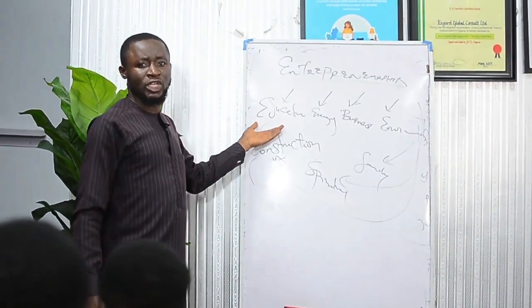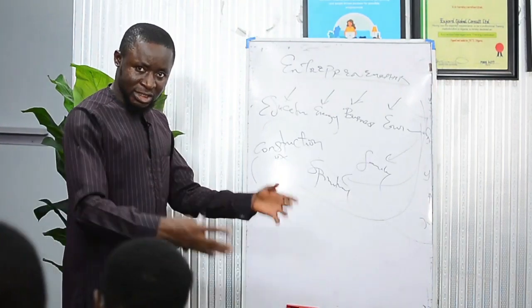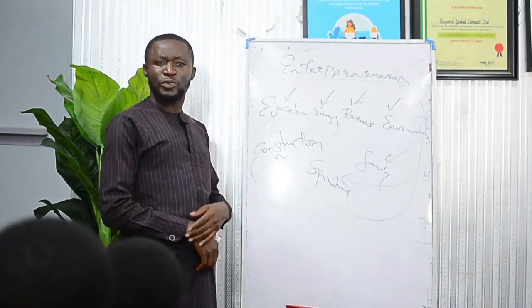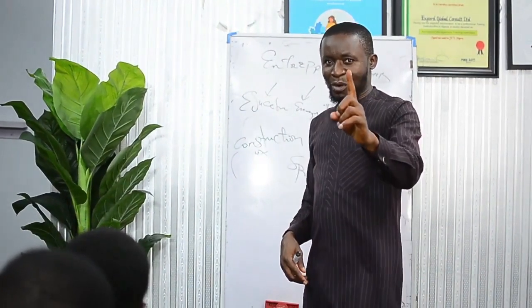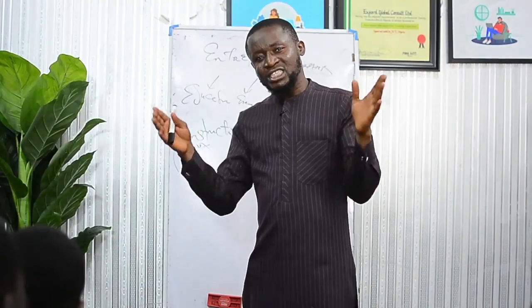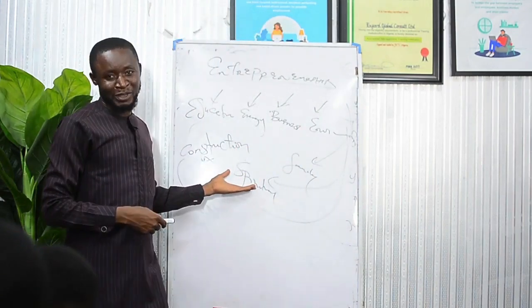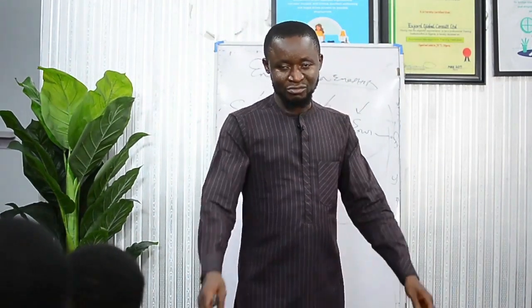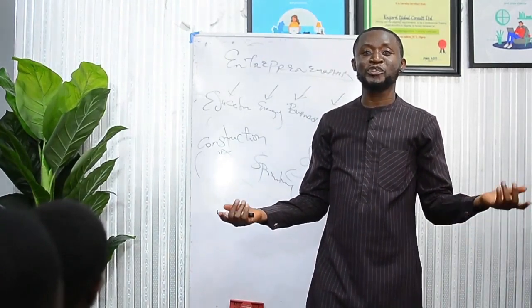Look at the power failure in Nigeria and Africa — you can set up a solar panel company. Education is going down: graduates come out of school and there are no jobs because they've only been taught theoretical things. You can set up a place where you teach graduates and job seekers how to start businesses. These are societal problems. Money does not come to people who love money — money comes to people who know how to create it. Find a societal problem.